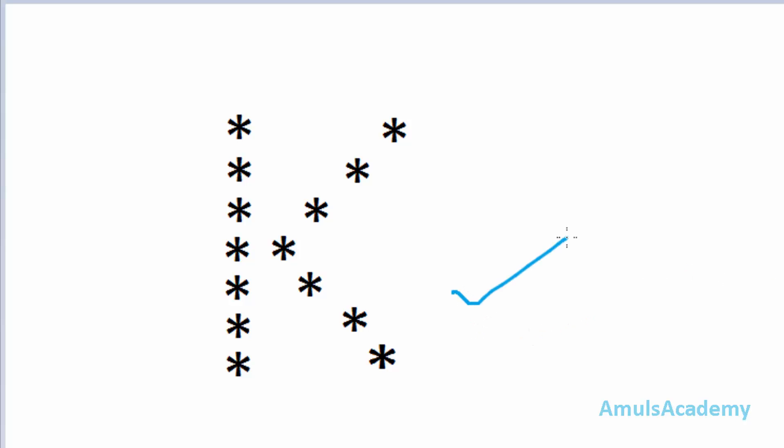Hello guys and welcome to Python programming tutorials by Amuls Academy. Today in this tutorial we are discussing about how to print stars in alphabetical K shape. So let's begin with the code.